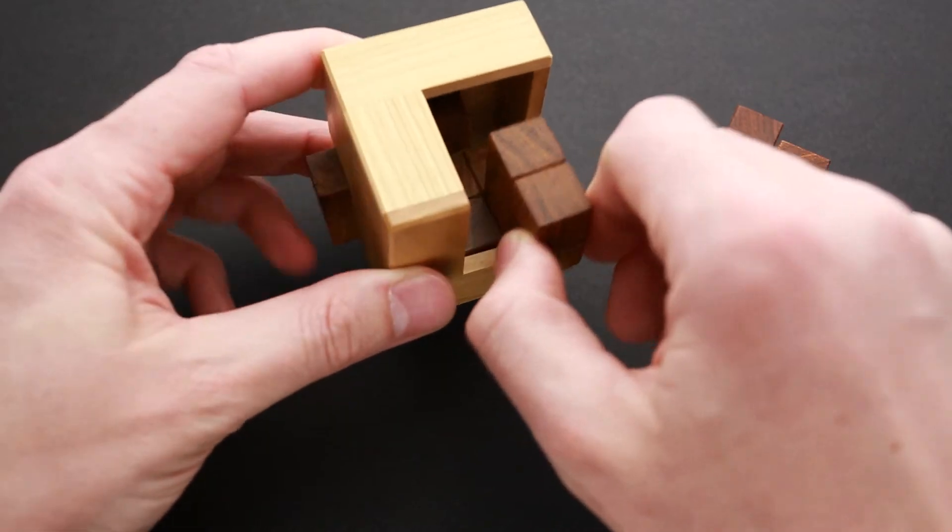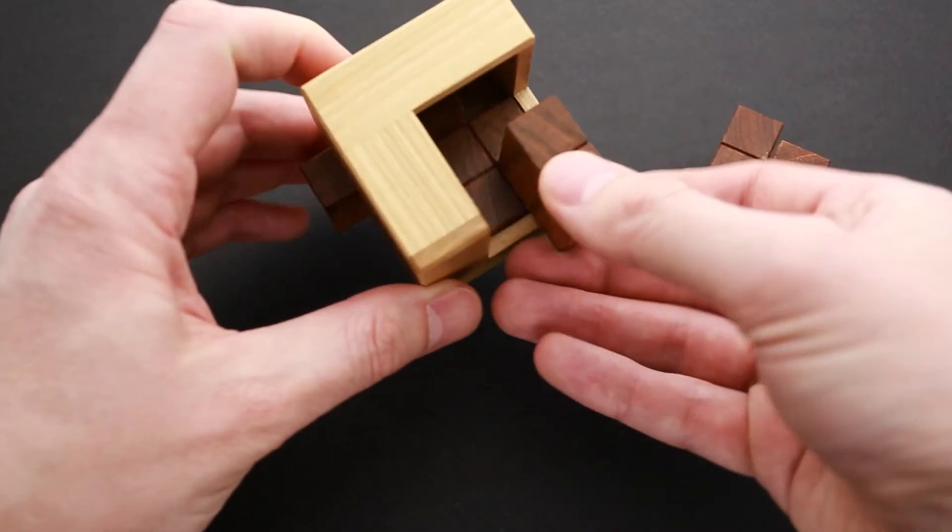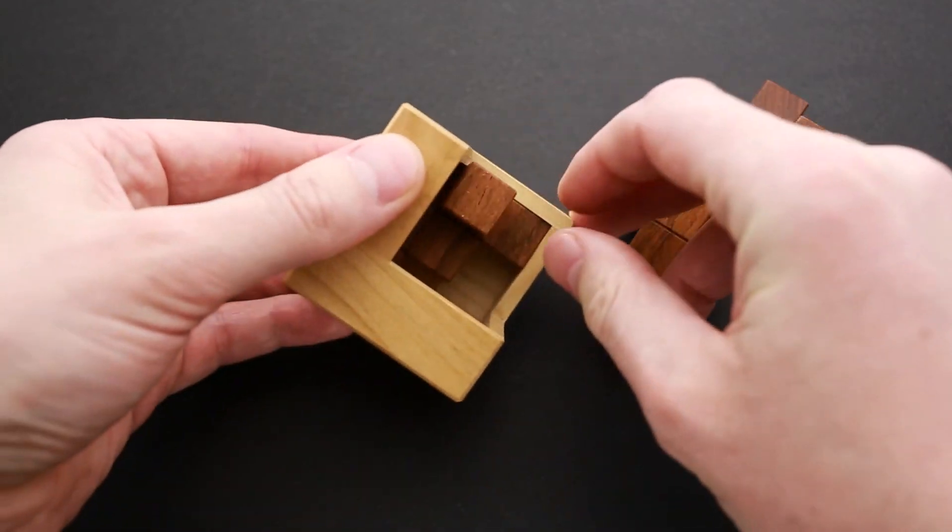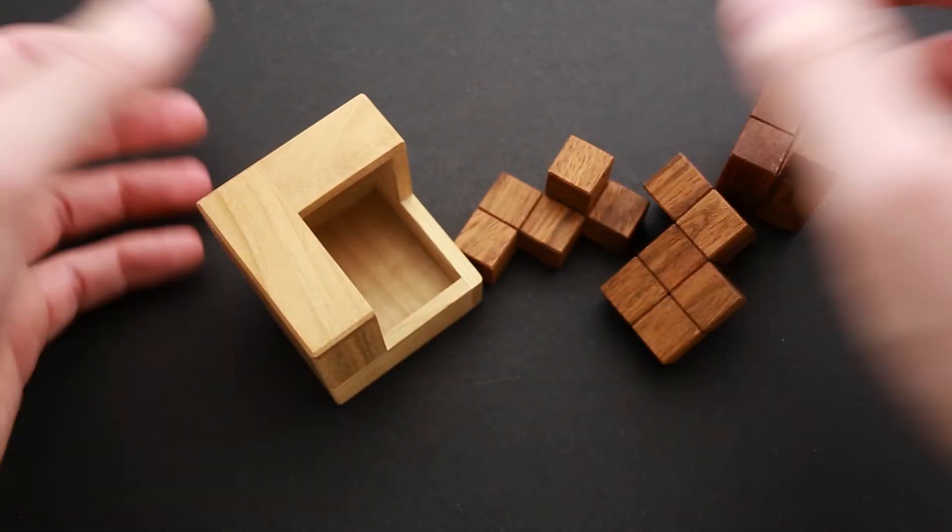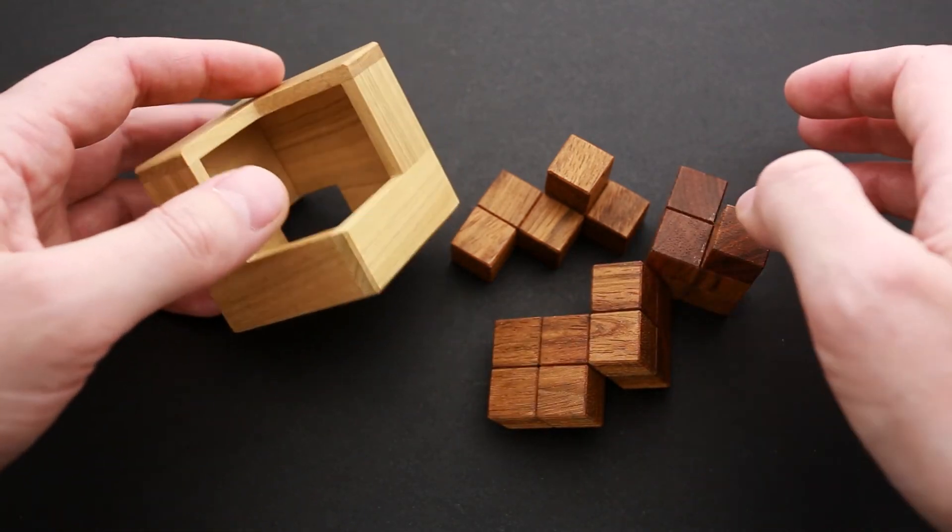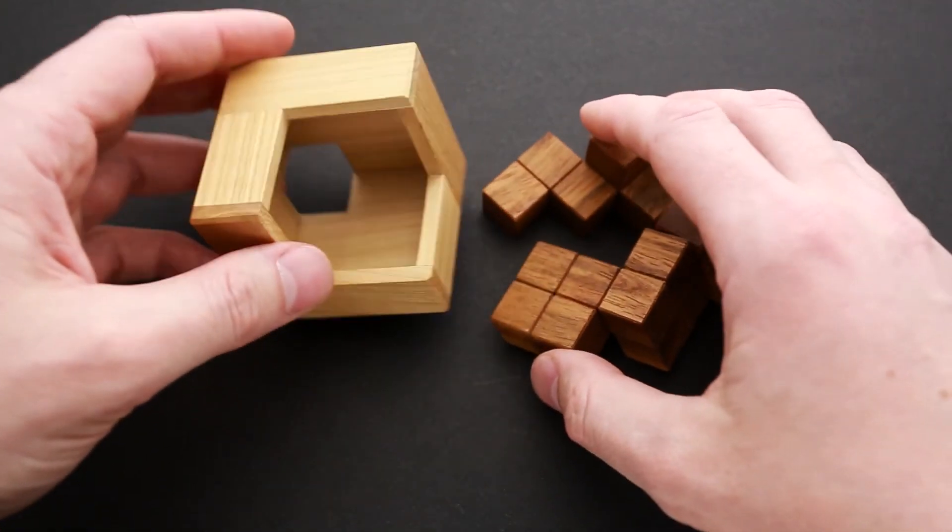Now we can remove all other parts as well. That was the solution of triple three puzzle. You saw how to put all three parts inside and how to remove them from the frame.